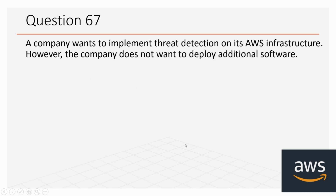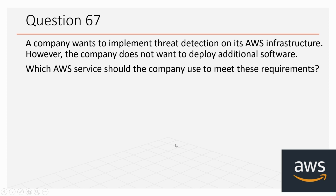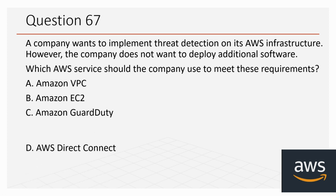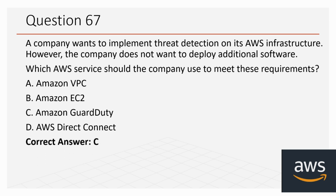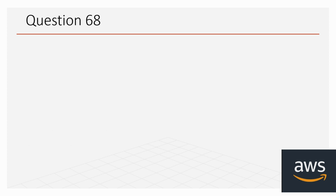Question 67: A company wants to implement threat detection on its AWS infrastructure but does not want to deploy additional software. Which AWS service should the company use? Options: A: Amazon VPC, B: Amazon EC2, C: Amazon GuardDuty, D: AWS Direct Connect. The correct option is Amazon GuardDuty, which can be used for threat detection on the AWS infrastructure.